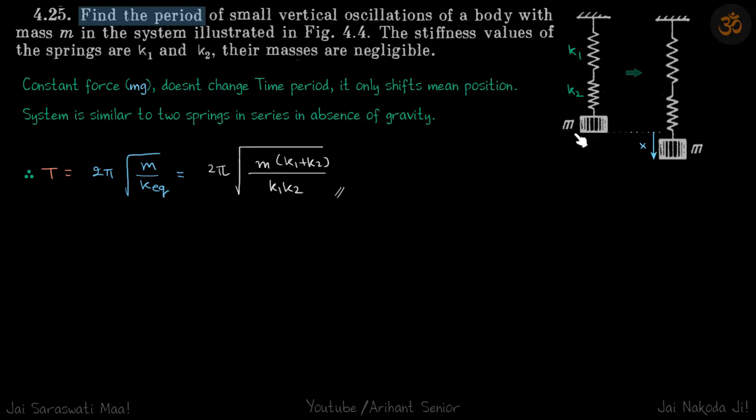We have a mass m hanging from two springs k1 and k2. We need to find what will be the time period of the oscillations if this mass is pulled. Because mg is a constant force,